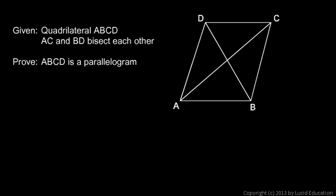ABCD is the quadrilateral, and we're told that AC and BD bisect each other. So this point right here in the middle is the midpoint of side AC, so this has to equal this. And it's the midpoint of side DB, so that has to equal that.